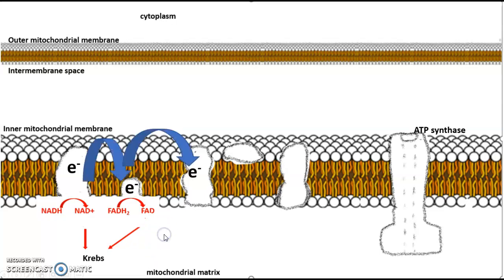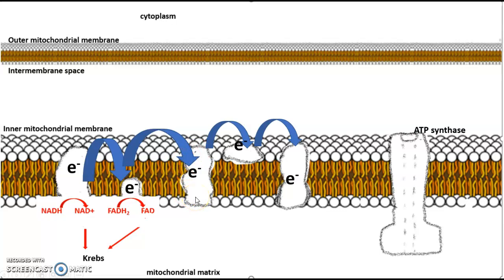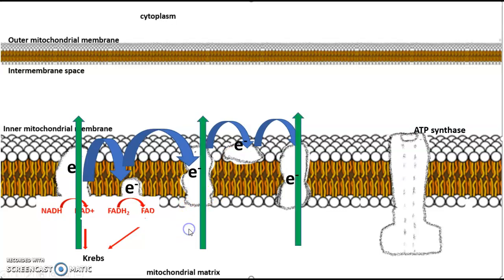These electrons then move down the electron transport chain in a bump-biddy-bump-biddy-bump kind of pathway. Each electron carrier is slightly more electronegative than the previous one, so the electrons move spontaneously from one complex to the next. Each complex can only receive electrons when it has passed off its electron to the next complex. This process does not require energy — in fact, it releases energy — and that energy is used to pump hydrogen ions from the mitochondrial matrix to the intermembrane space.